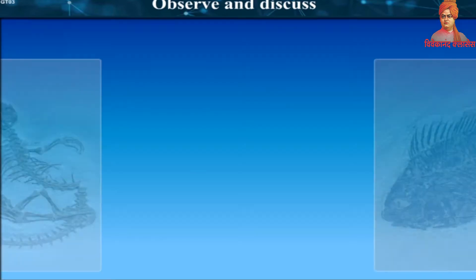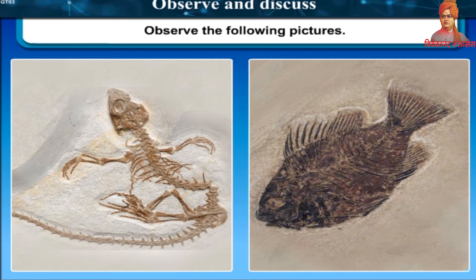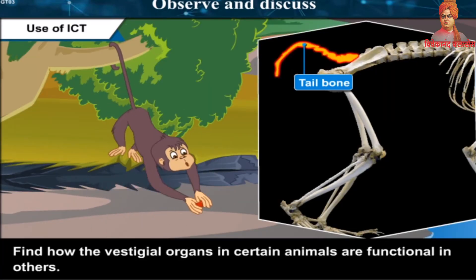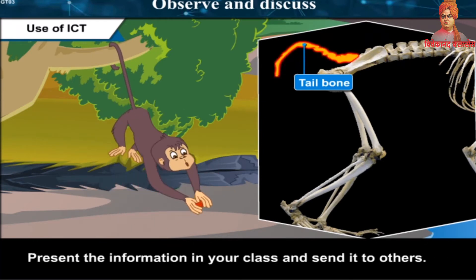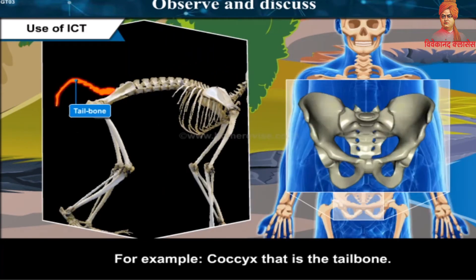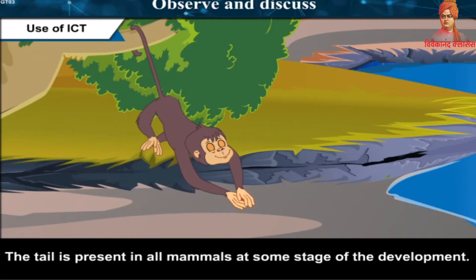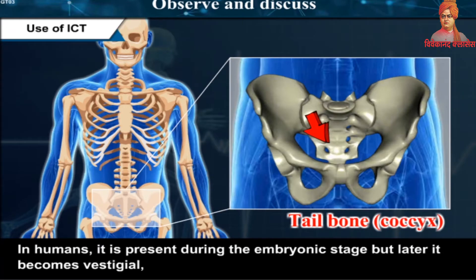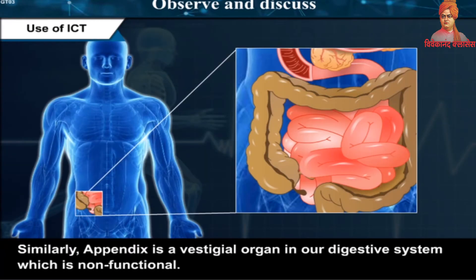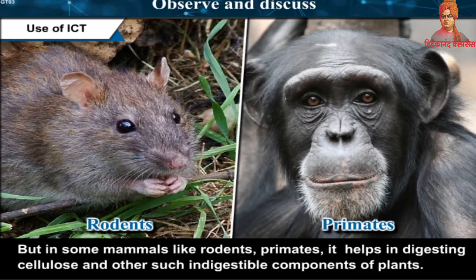There are certain organs which are vestigial in humans but functional in other animals. For example, the coccyx — the tailbone — is present in all mammals at some stage of development. In humans it is present during the embryonic stage but later becomes vestigial, whereas in animals it is a functional organ helping them maintain balance and mobility. Similarly, the appendix is vestigial in our digestive system, but in some mammals like rodents and primates it helps in digesting cellulose and other indigestible components of plants.